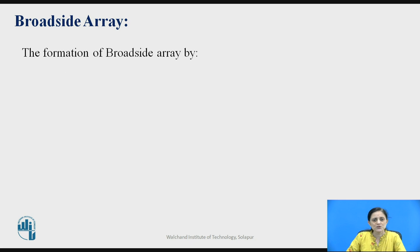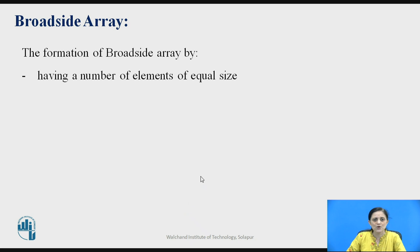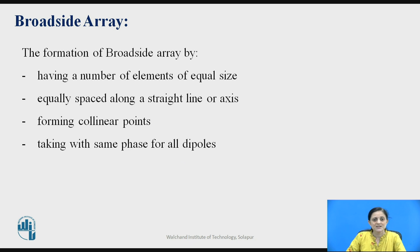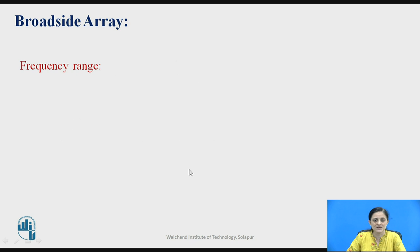How is the broadside antenna array formed? It is formed by having a number of elements of equal size connected in a line, equally spaced along a straight line or on an axis, forming collinear points. These arrays are formed by taking the same phase for all the dipoles, that is, for all elements.